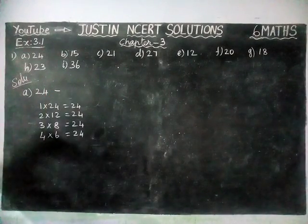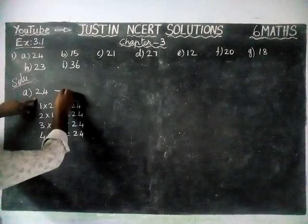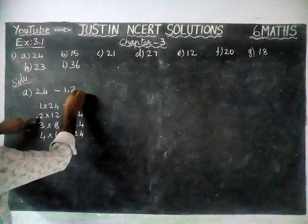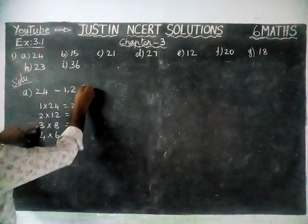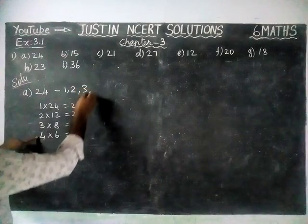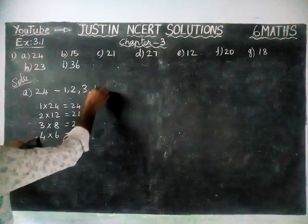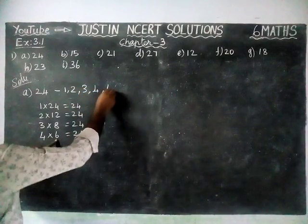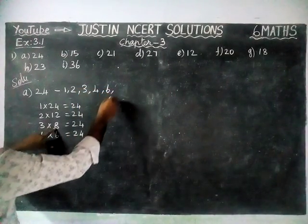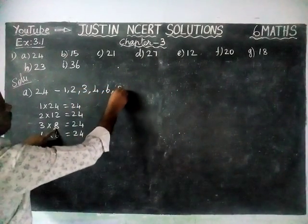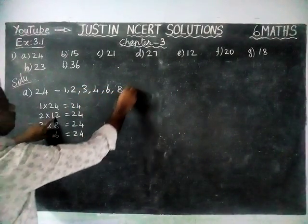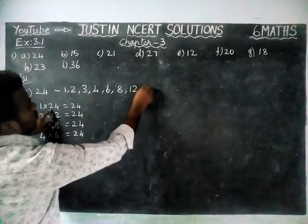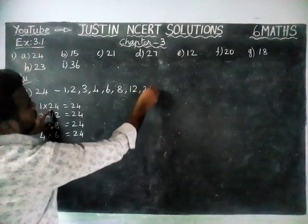So the factors of 24 are: 1, 2, 3, 4, 6, 8, 12, 24.